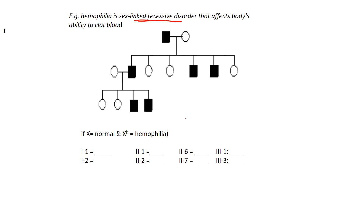The reason it mostly affects males is because males only have one X sex chromosome — the other being a Y. So if they have the mutation on that one X, they don't have the benefit of a normal X to mask the expression of it. If they have one X with the mutation, they have the disorder.